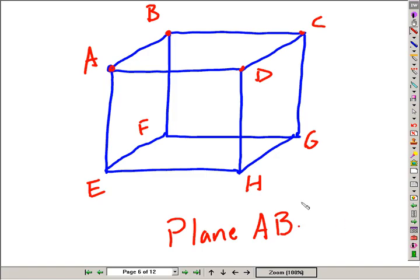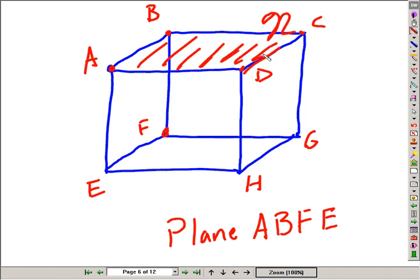If I wanted to name the left-handed wall, I would call it A, B, F, or A, B, F, E. So naming planes using capital script letters like capital N to name the top of the box, or using the points.